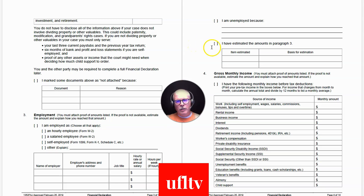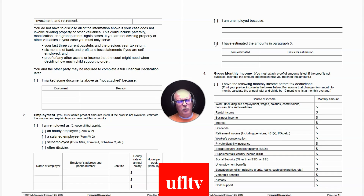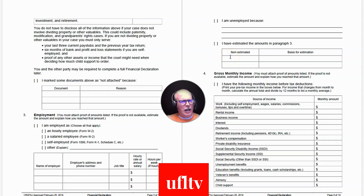On page 4, if you're unemployed, check that box and use the lines provided to explain why — whether you recently lost your job or are disabled. If you've estimated some of the amounts in paragraph 3 because you don't know exactly what you get paid — for instance, if you're self-employed with an all-cash business and don't do much bookkeeping — you have to explain that and provide a reason why you can't give an exact monthly or annualized monthly income figure.